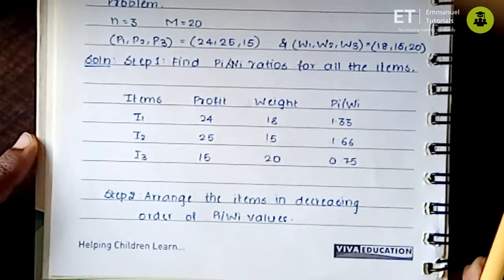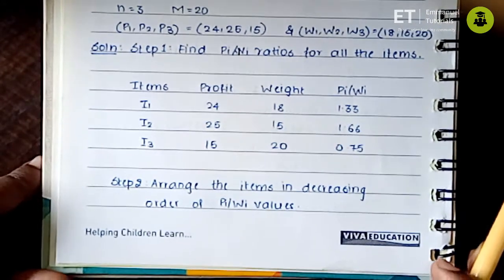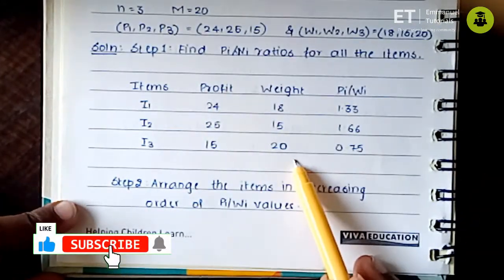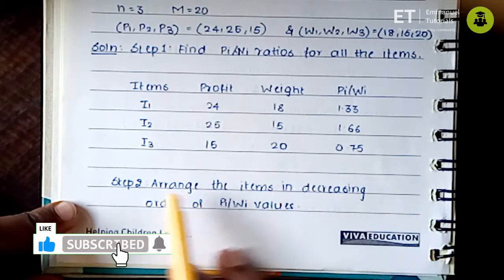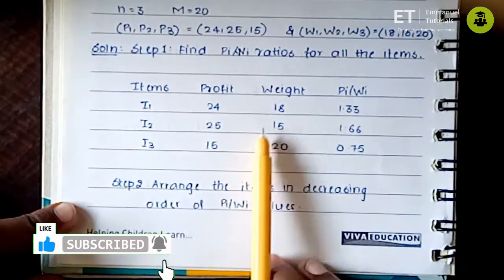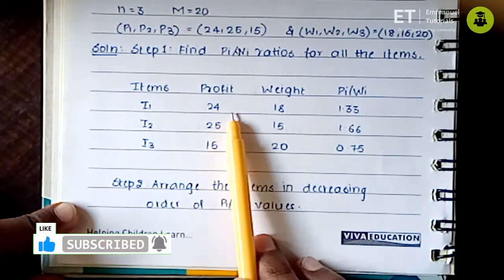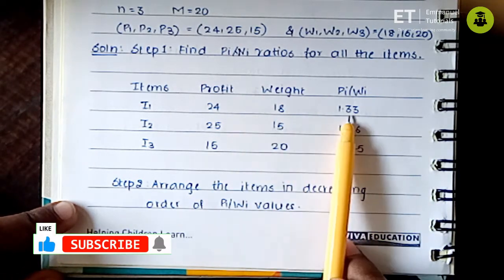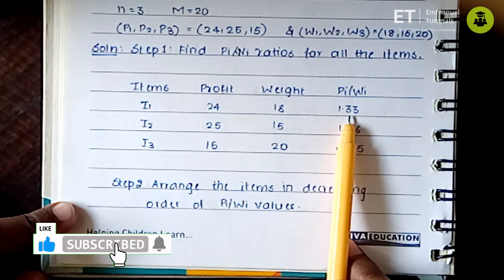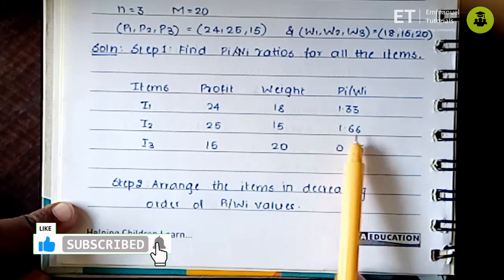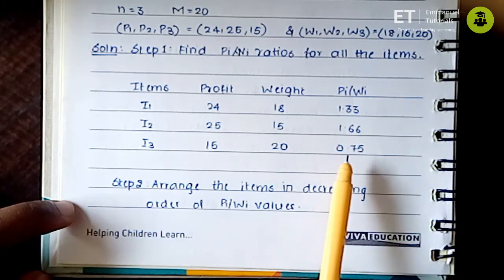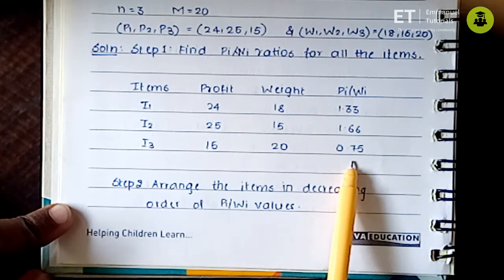Just like the 0/1 knapsack problem, we have to find the profit-by-weight ratios for these items. We have listed down the items with their profit and weight. The P/W ratio for item 1 is 1.33, for item 2 it is 1.66, and for item 3 it is 0.75.